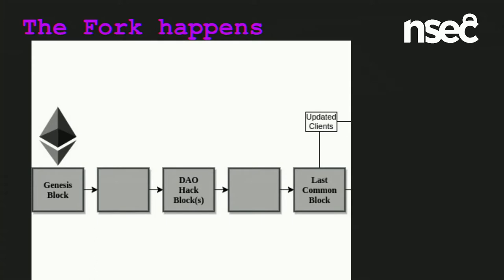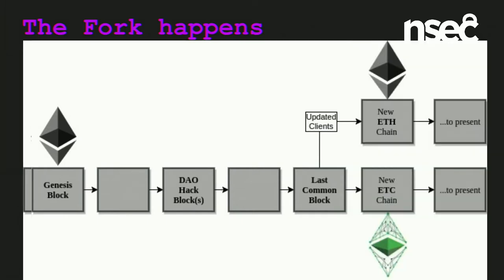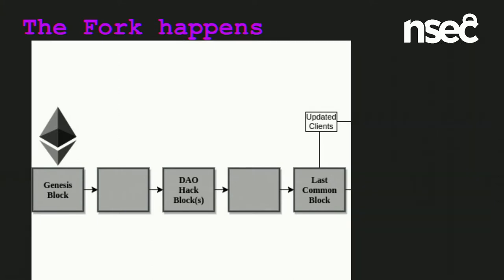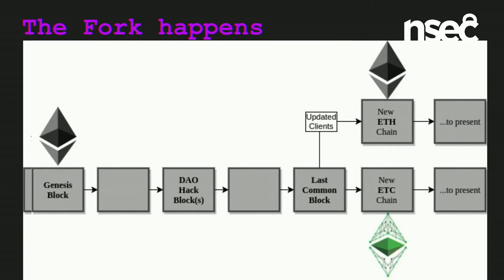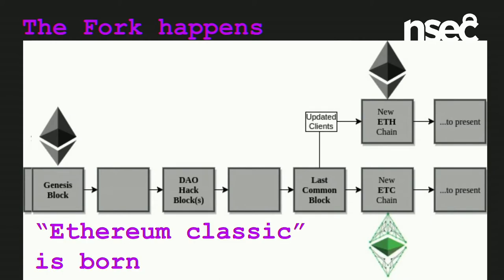They updated the client, announced the block number at which the change would occur. Everybody was confident there would be one true chain that would carry on. But ultimately, with so much contention, we got a split — and a whole new chain was born. It's up to you which one you think is the real one, but Ethereum Classic emerged. Not only the chain and history, but the community really divided — there was a real philosophical divide.